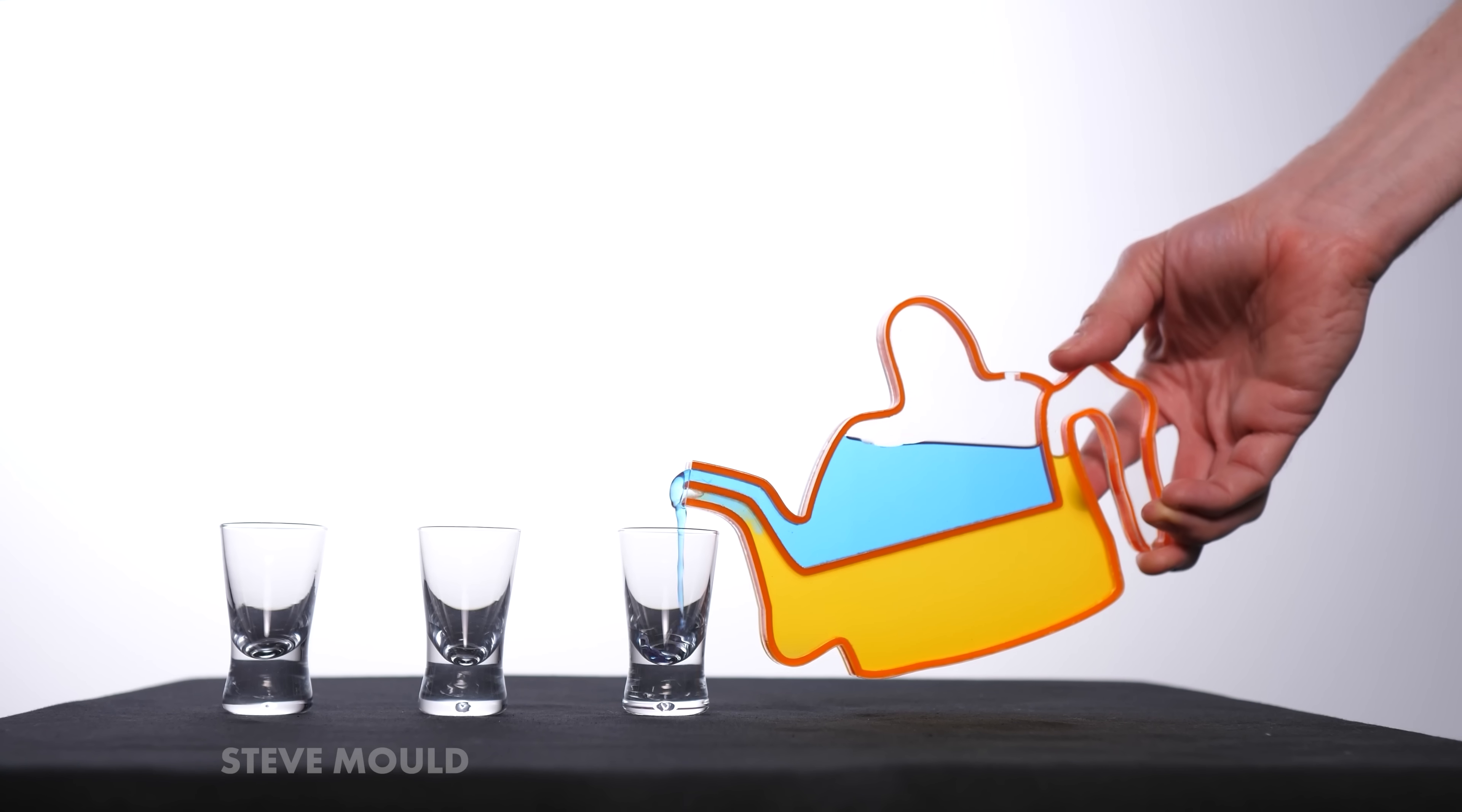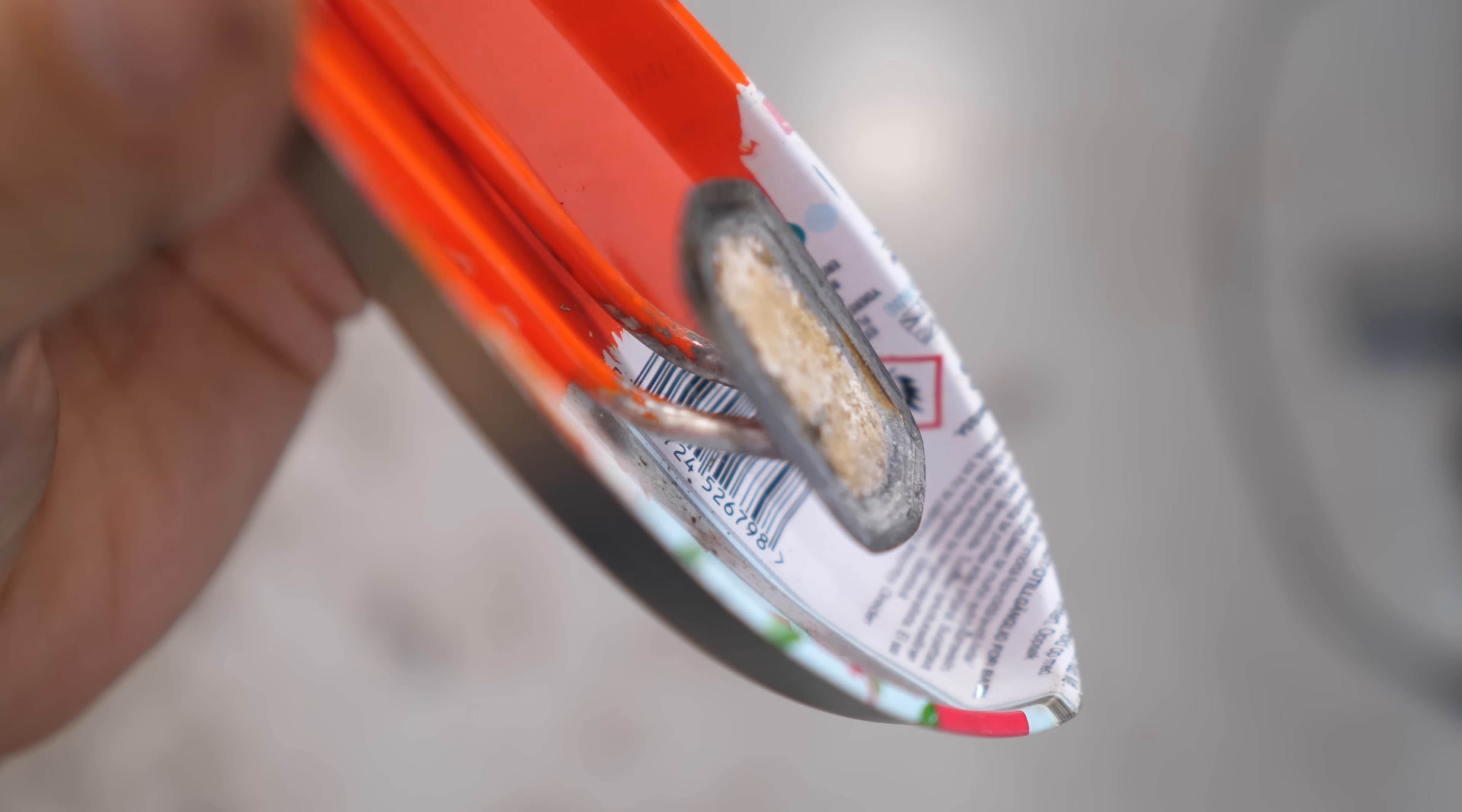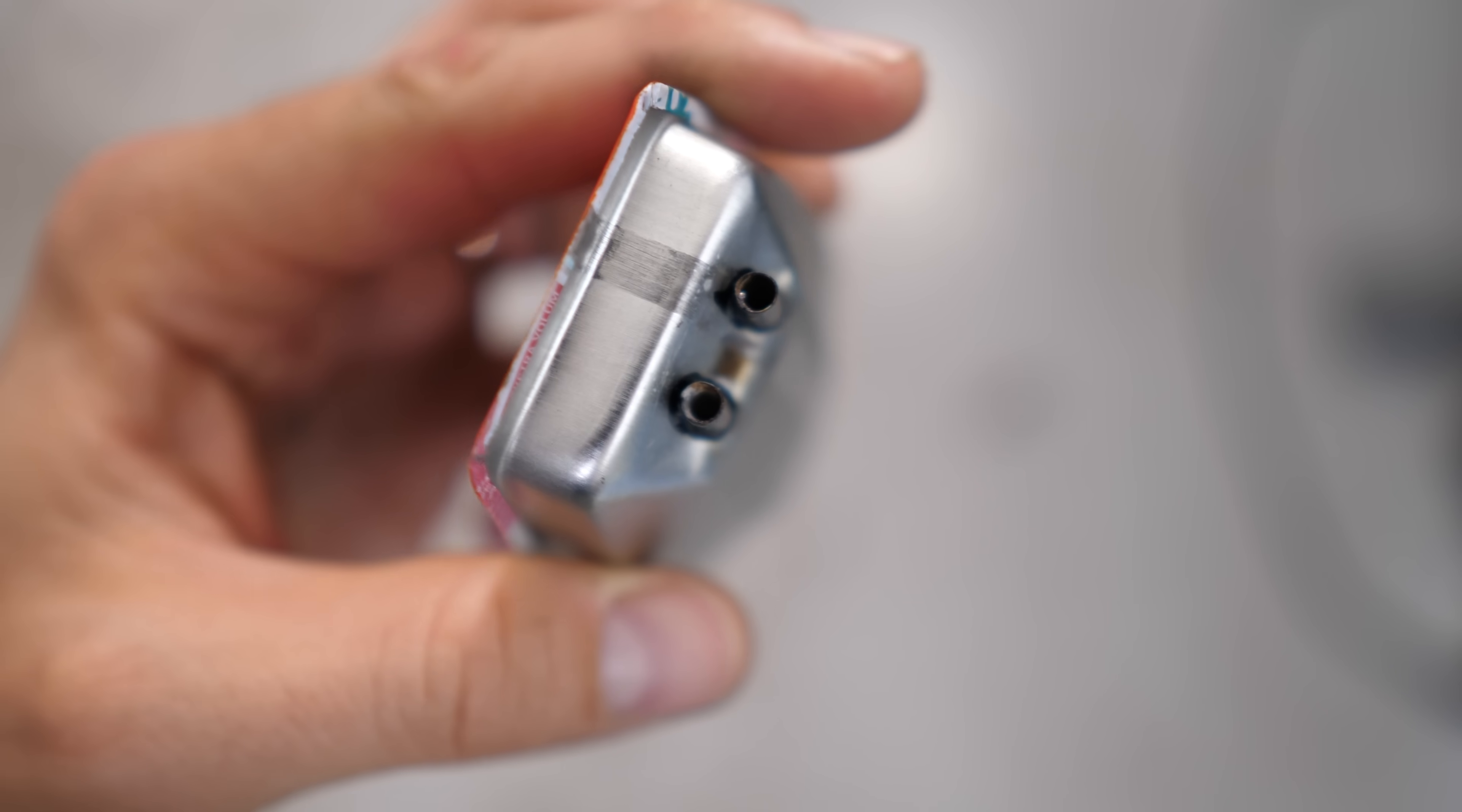This channel is rapidly becoming the transparent version of things channel, but anyway, let's have a look at the regular pop-pop boat first. You've got this little tank here with two pipes coming out the back, and if you follow those pipes, they come out at the back of the boat under the level of the water.